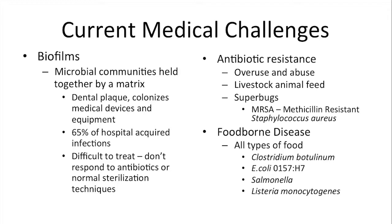We also have antibiotic resistance because we have overused and abused antibiotics. Many times people are given antibiotics when they have a viral infection. A virus does not respond to antibiotic treatment, so it does no good for the virus — but what it does do is put so much antibiotic out there that it encourages the natural selection of any bacterial cells that have mutations allowing them to survive in the presence of antibiotics.